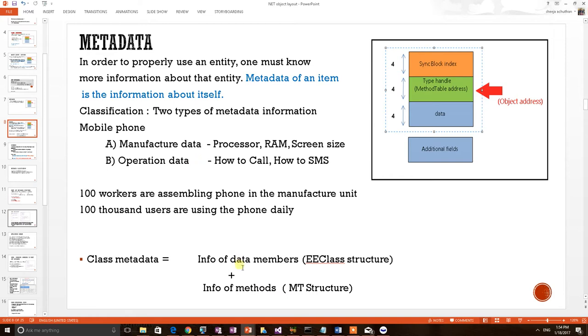In .NET, both these information are stored into two different data structures. Information about data members is stored at EE class structure, and information about the method is stored at method table structure. Both combination is the total metadata of the class.